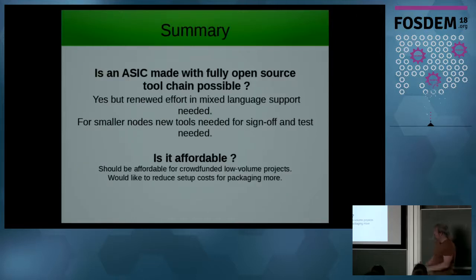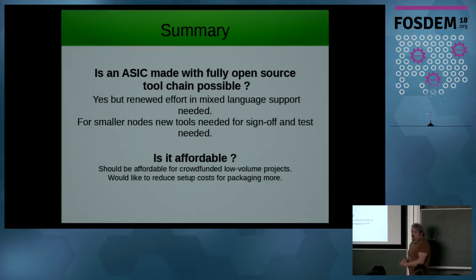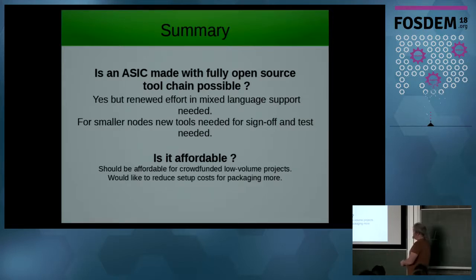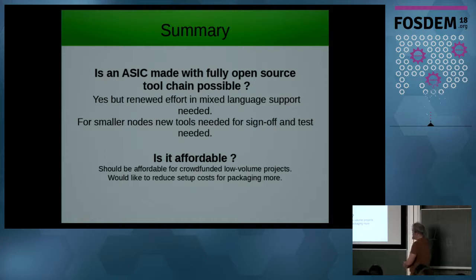To summarize: is an ASIC made with a fully open-source toolchain possible? Yes — I think it's possible for mature technologies certainly. We should try to get some renewed effort in mixed-language support for the tools. For smaller nodes, new tools are needed for sign-off and test, but the setup costs also become higher there — so the older nodes are good enough and you can do a lot with them. Is it affordable? I think it should be affordable for crowd-funded, low-volume products. If you have references to reduce setup costs further, I'm all ears.